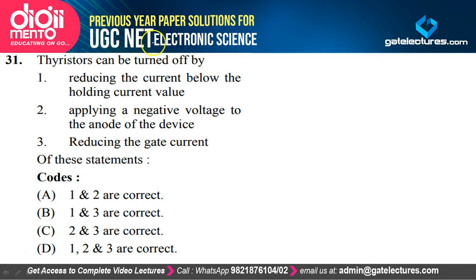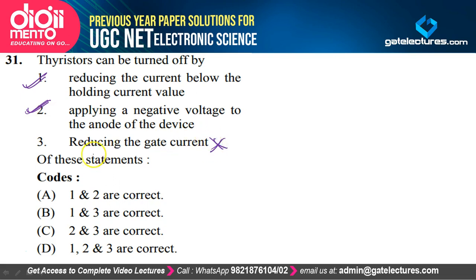Thyristors can be turned off by reducing the current below the holding current value — this is definitely correct. Applying a negative voltage to the anode of the device is also correct. Reducing the gate current is not relevant. So option A is correct.